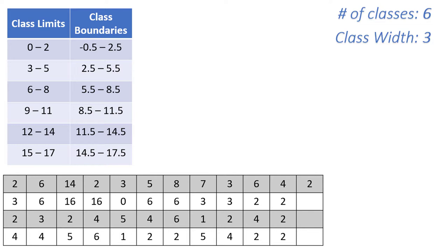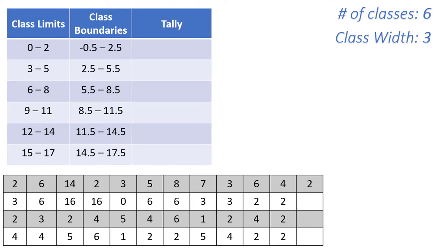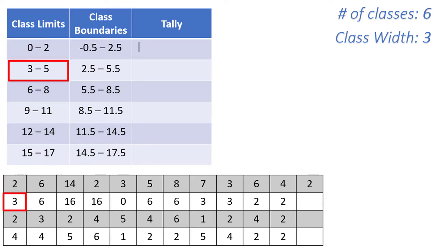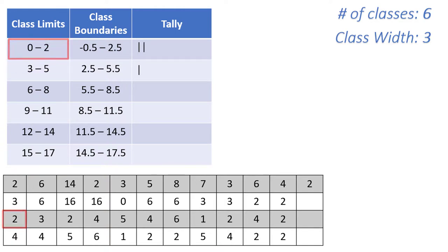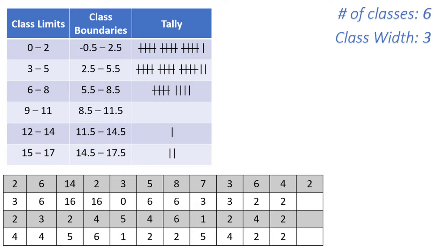Next, count how many values fall into each of your classes, which is frequently done by use of tallies. Simply look back at your data and determine which class each value falls within. Our first data point is 2, which is within the first class from 0 to 2, so we make a tally next to the first class. The second data point is 3, which falls in the second class ranging from 3 to 5. It might help to cross out numbers you've already counted. Every time you reach a multiple of 5, place a dash through the group of tally marks to make them easier to count.